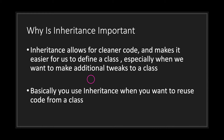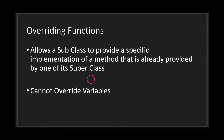Why is inheritance important? Inheritance allows for cleaner code and makes it easier to define a class when you want to make additional tweaks. You use inheritance when you want to reuse code from a class. For example, if your game needs 20 different types of animals, instead of writing similar code in each class, you create one base class as a single source of truth, and your animals inherit from it. Instead of writing 100 lines of code in each class, you can cut that down to maybe 10 or 20 lines per subclass.